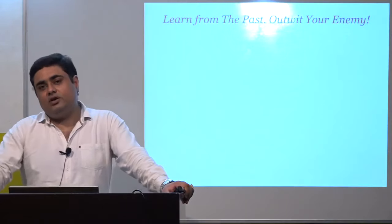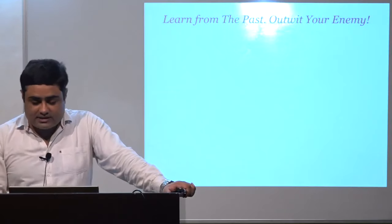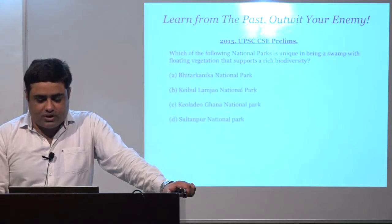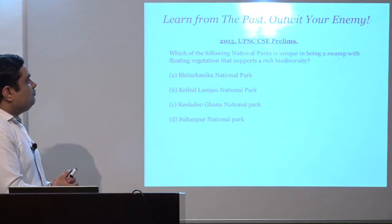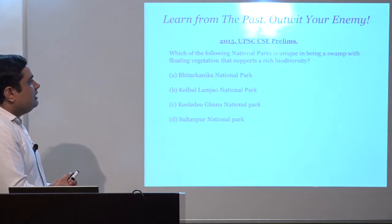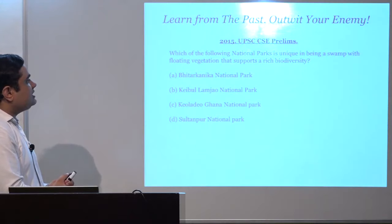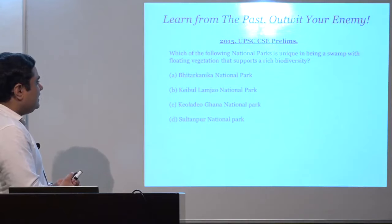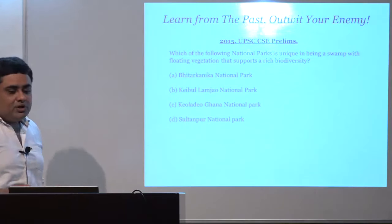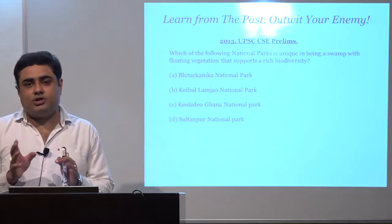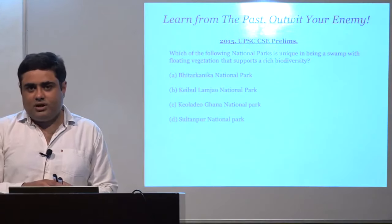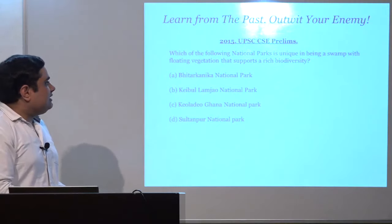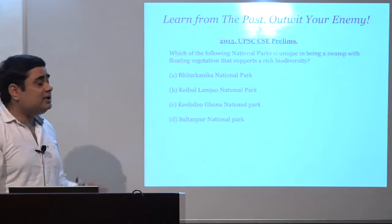Now we are coming to the questions asked by UPSC so we have an idea of how to tackle those questions and what learning we can have. Learn from the past — outwit your enemy that is UPSC. The 2015 UPSC civil services prelims question says: 'Which of the following national parks is unique in being a swamp with floating vegetation that supports a rich biodiversity?' The options are: Bhitarkanika National Park, Keibul Lamjao National Park, Keoladeo Ghana National Park, and Sultanpur National Park.